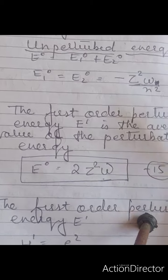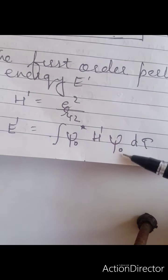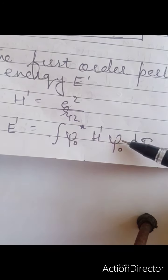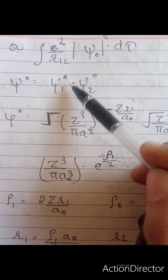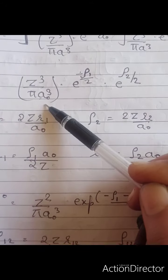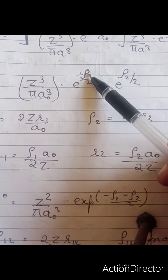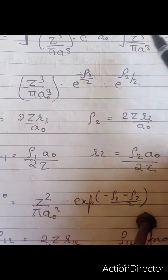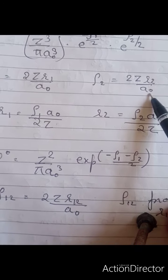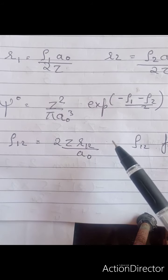In terms of the normalized wave function, the first order energy is given by the integral of ψ⁰*·H¹·ψ⁰·dτ. We know the value of ψ⁰ = ψ₁⁰·ψ₂⁰, and substituting these values and further solving gives the equation. We replace the radial term by ρ₁, where ρ₁ = 2ZR₁/a₀. Similarly the other term is replaced by ρ₂ = 2ZR₂/a₀. From these we can express R₁ and R₂, and finally obtain the equation for energy.